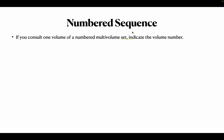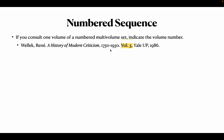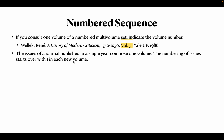Sometimes the work can come as part of a numbered sequence. If you consult one volume of a multi-volume set, you have to indicate the volume number. For example: Velek, René, 'A History of Modern Criticism, 1750 to 1950,' Vol. 5. That means you are referring only to the fifth volume.